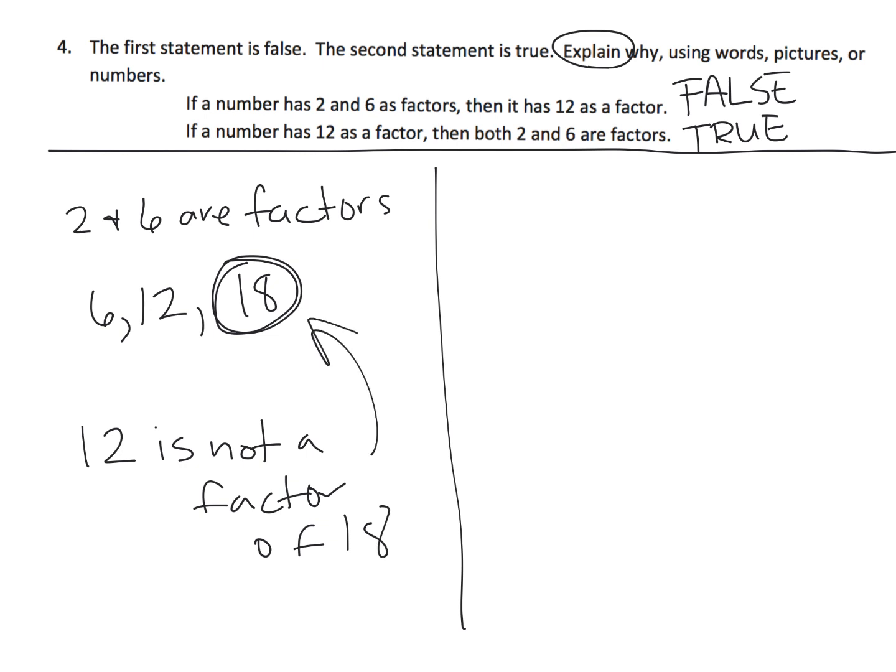In fact, we can even backtrack a little bit and say 6 does not have 12 as a factor, because you cannot say 12 times something equals 6, using whole numbers.